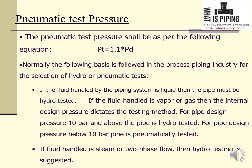For pneumatic test pressure, the pressure is 1.1 times the design gauge pressure Pd — that is, 10% more than the design pressure. For the selection of hydro versus pneumatic test in the process piping industry, the first criterion is: if the fluid handled by the piping system is a liquid, then the pipe must be hydro tested.